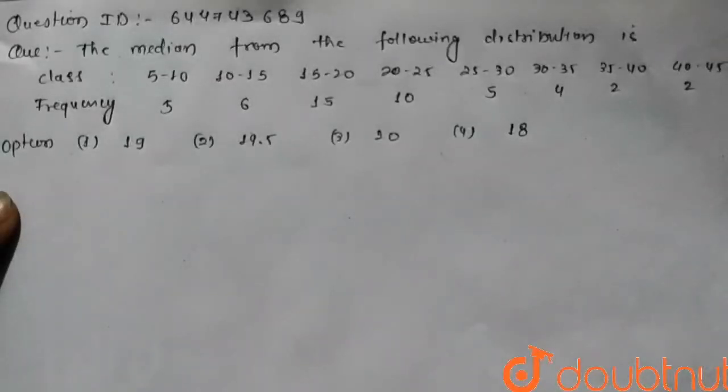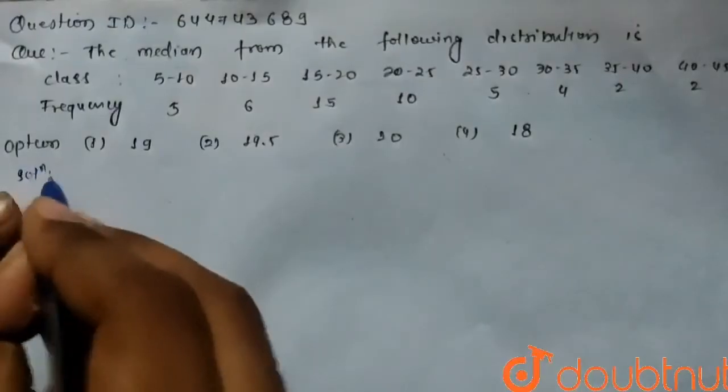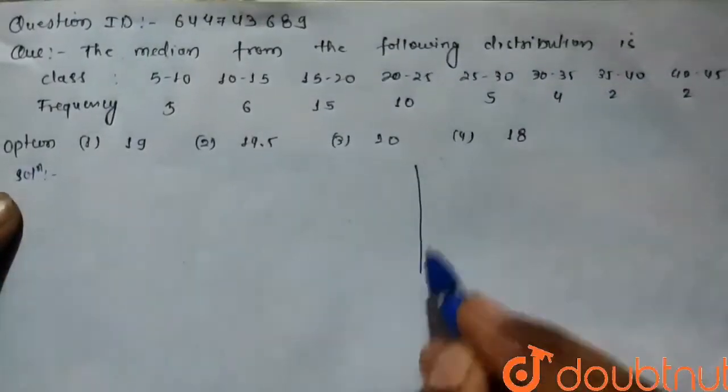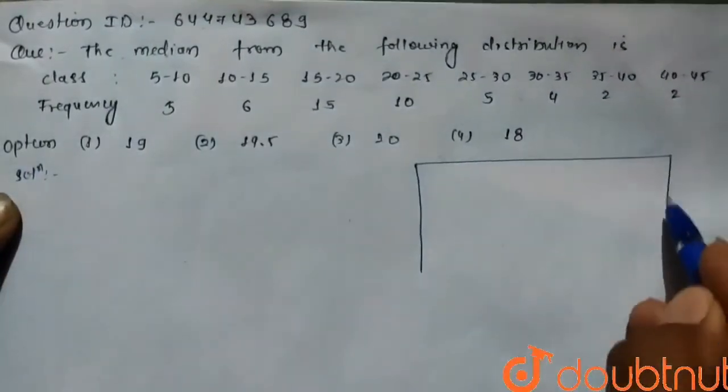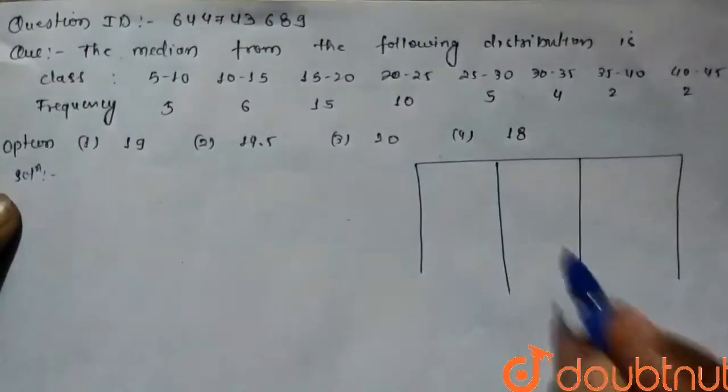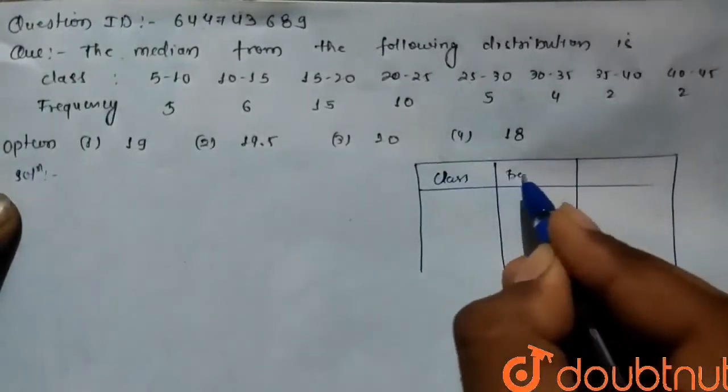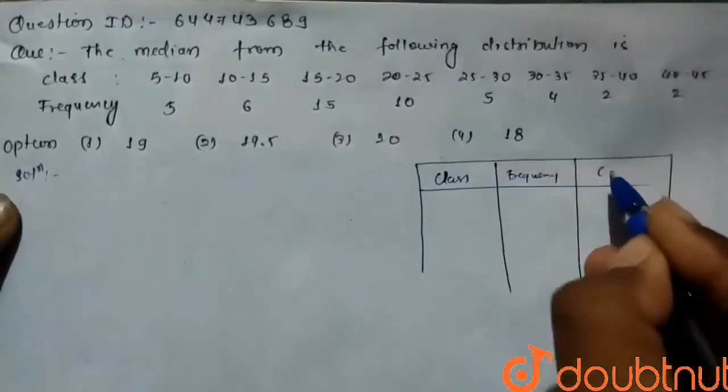Everyone, in this question, the median from the following distribution table, the given class and frequency. So in solution part, we draw this table and write classes, frequency and cumulative frequency.